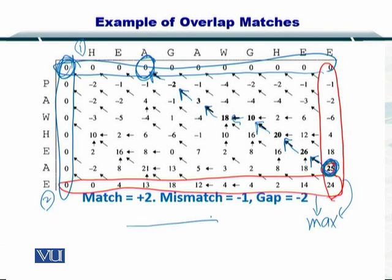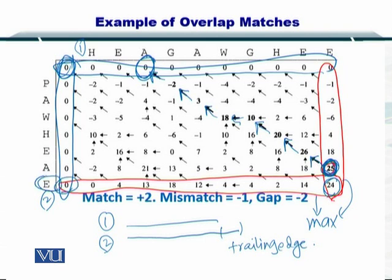if this is sequence number one, then it contains a portion of sequence number two, such that sequence number two has a trailing edge. You can see that because there is still one element that is not considered in the best alignment. So the trailing edge has an E here.